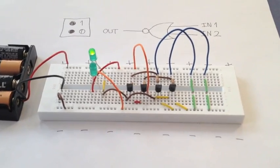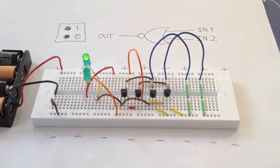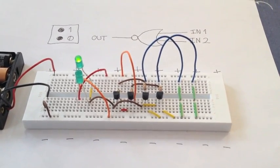The gate works as it should. The output is high only if both inputs are low, otherwise the output is low.